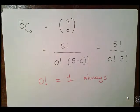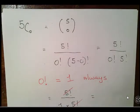What we have here is 5 factorial over 1 times 5 factorial, which is essentially the 5 factorials cancel out, and we're just left with 1 over 1, so it's just 1.